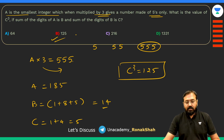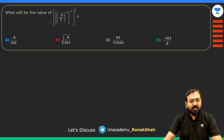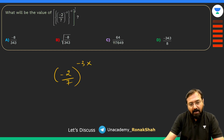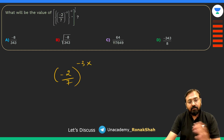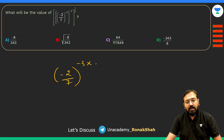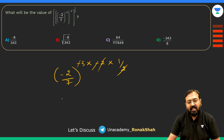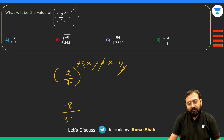The next question is very easy. We have (−2/7) raised to a power with power-of-a-power rules — the powers multiply. The result is the cube of (−2/7), which is −8/343. That's your answer.